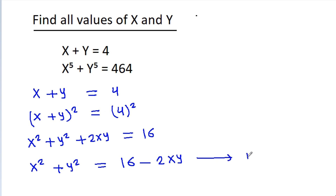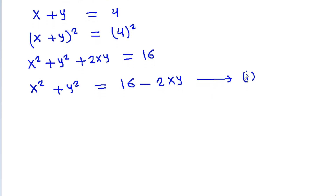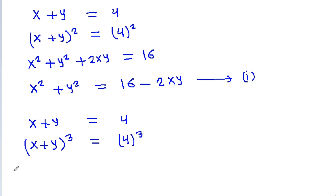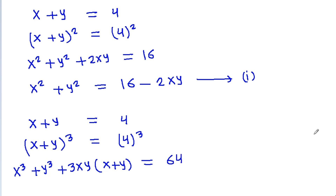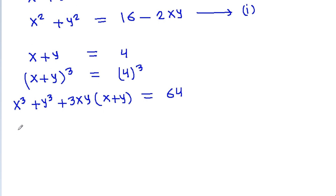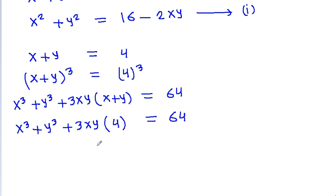Suppose this is equation 1. We have x plus y is equal to 4 and if we cube both sides, then x plus y whole cube will be equal to 4 cube, which is 64. Expanding gives x cube plus y cube plus 3xy times x plus y is equal to 64. So x cube plus y cube is equal to 64 minus 12xy.